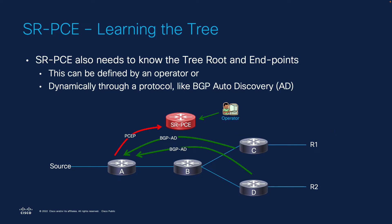Second in the list is the discovery of the tree root and leaves. This can be done statically by the operator or dynamically through a protocol such as BGP auto-discovery. With BGP auto-discovery, you can automatically let the controller know that you are a receiver for a particular multicast stream.